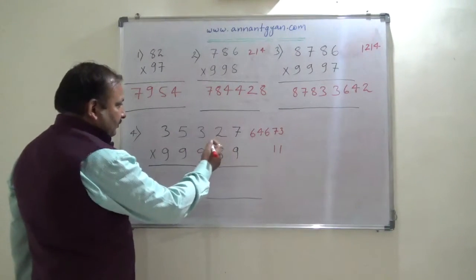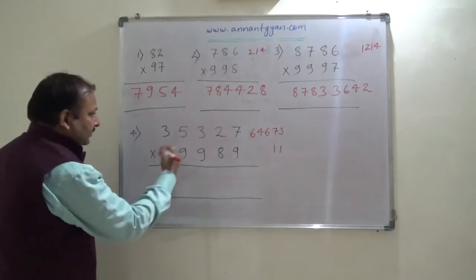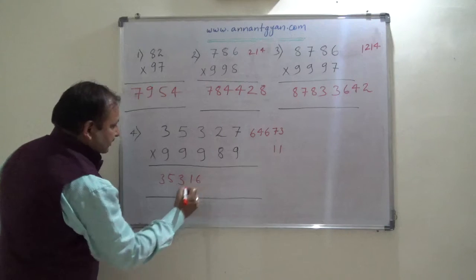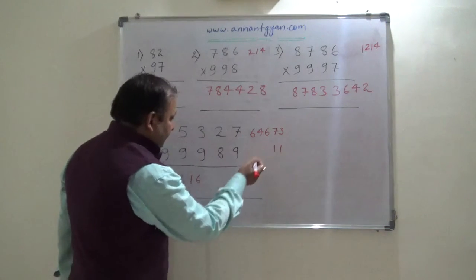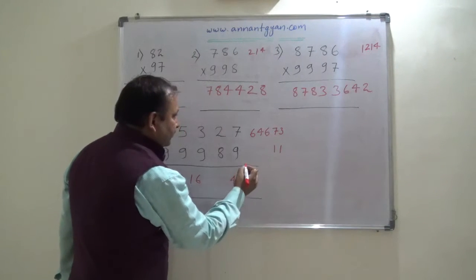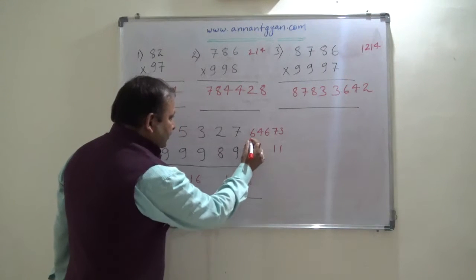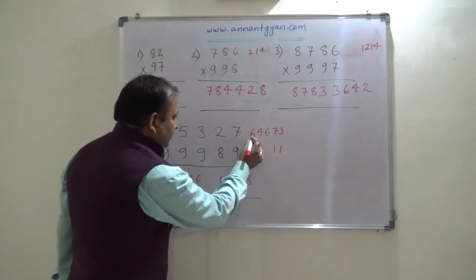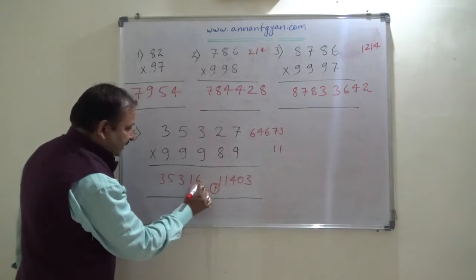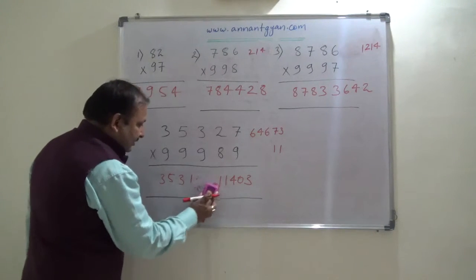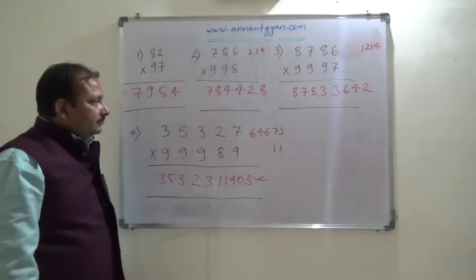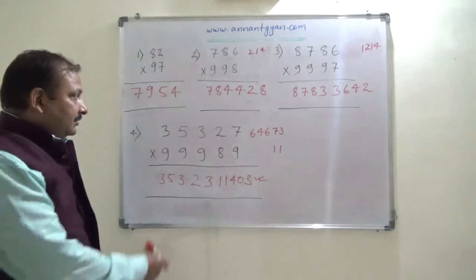Starting from the left hand side: 3, 5, 3, 1, 6 — and from the right hand side this is 3, 0, 4, 1, 1, 6, 1, 7. This 7 will be a carry for the next, so 16 plus 7 is 23, so we shall write 23. This is the final answer.